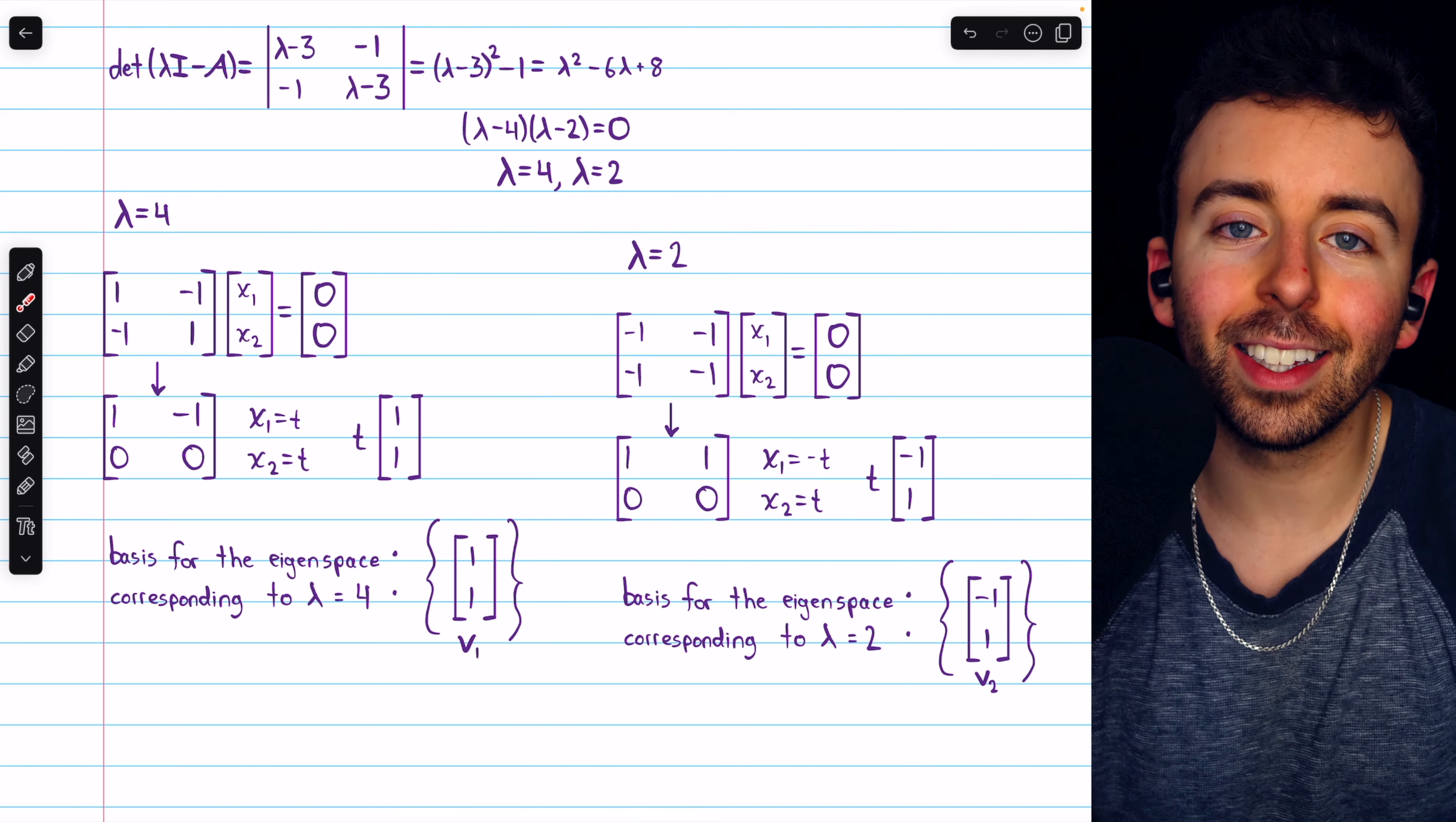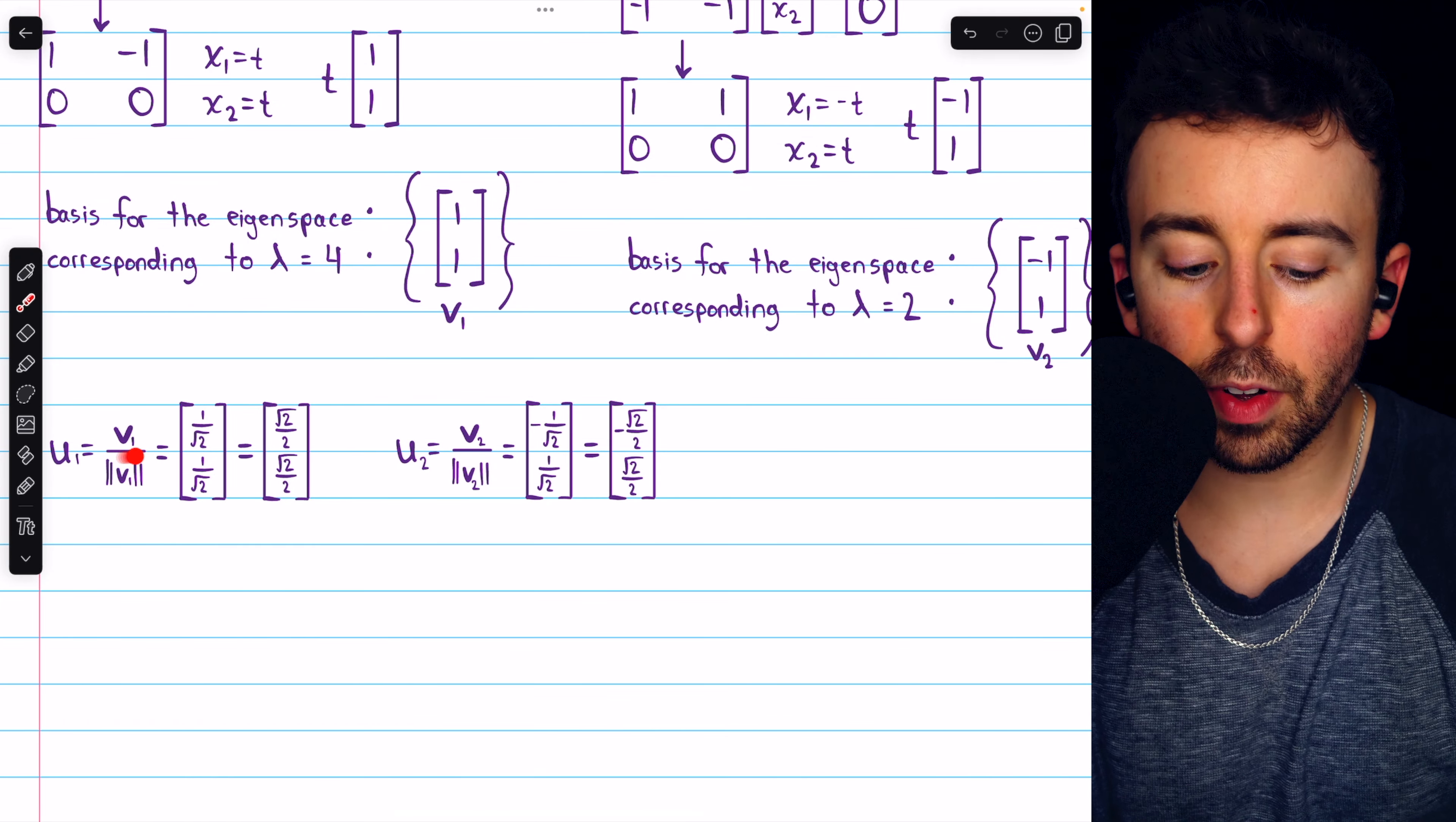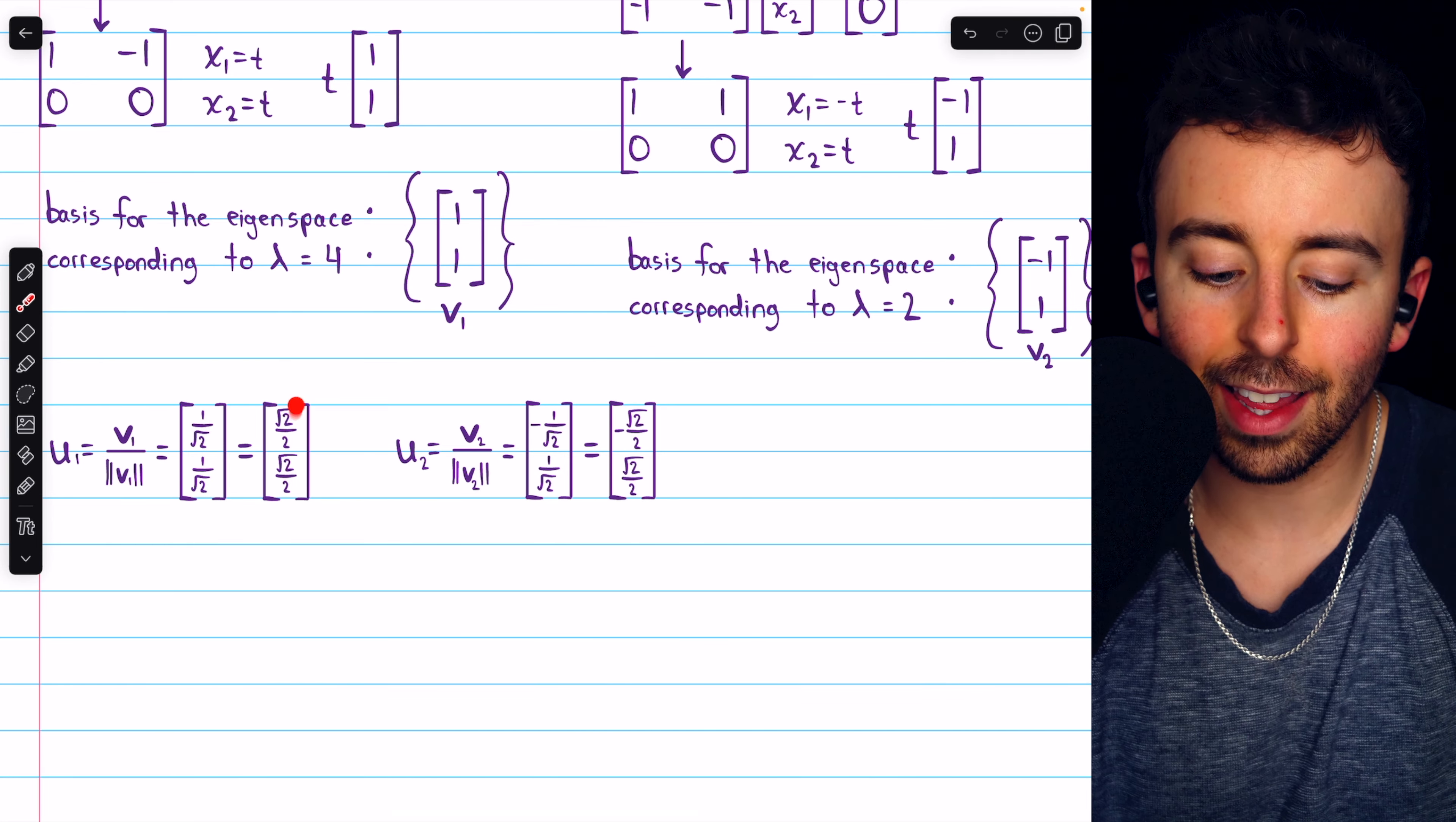Now step two of the orthogonal diagonalization process requires that we orthonormalize all of our basis eigenvectors. But these two vectors are already orthogonal. So all we have to do is normalize them. Then we can construct our orthogonally diagonalizing matrix P. We'll say that u1 is v1 divided by its norm, thus u1 is the unit vector in the direction of v1. Certainly, the norm of v1 is the square root of 2, so we just take this vector and divide by the square root of 2. We could then rationalize those denominators and write u1 like this.